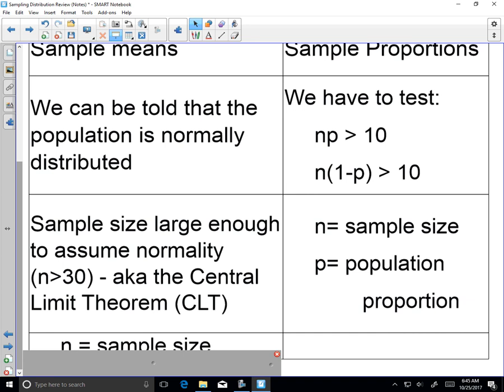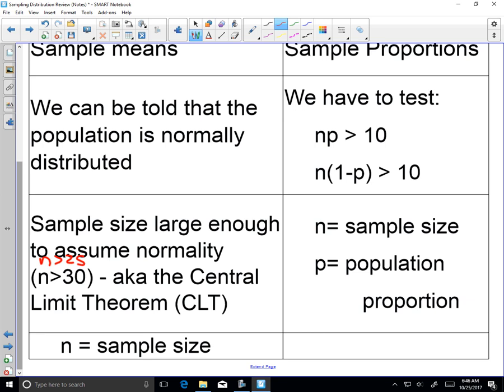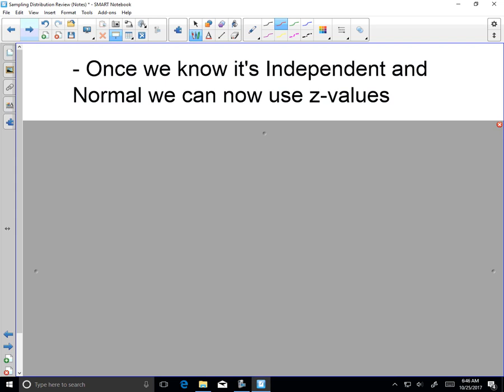Otherwise, we have our next piece, and it's working with your sample size. Your sample size has to be large enough to assume normality. And this is the idea of the central limit theorem. So sample size greater than 30, it can go down to sample size greater than 25. Different textbooks use different values here. But if your sample size is large enough, greater than 25, greater than 30, then you can assume that you have a normal sampling distribution. And once you've done that, then we can start working with z-values.